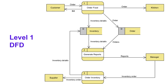A Level 1 DFD is more detailed than a Level 0. It is the decomposition, or breakdown, of the food ordering system process shown in the context DFD. The food ordering system DFD contains three processes: Order Food, Generate Reports, and Order Inventory; four external entities; and two data stores. The customer places an order, the Order Food process receives it, forwards it to the kitchen, stores it in the order data store, and updates the inventory data store.